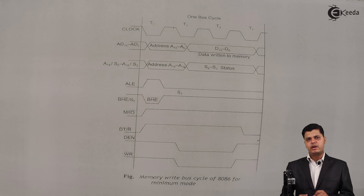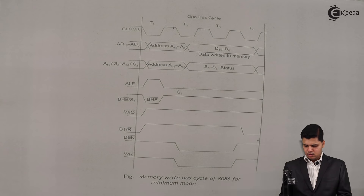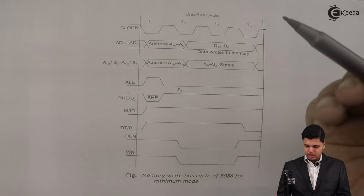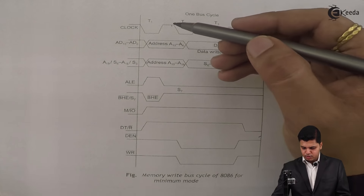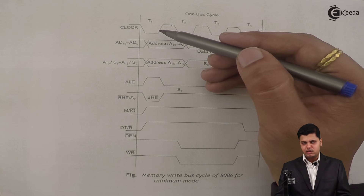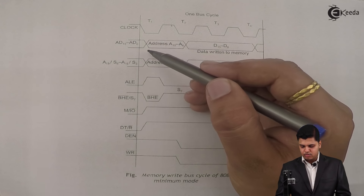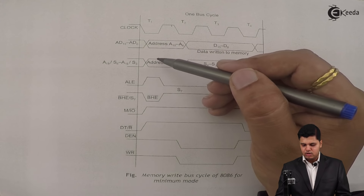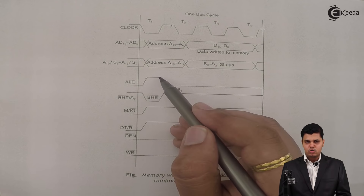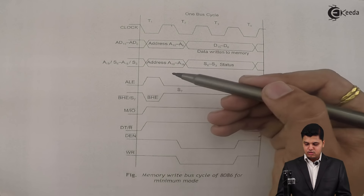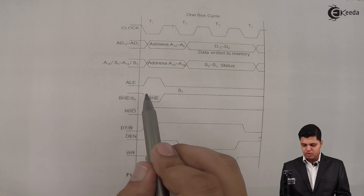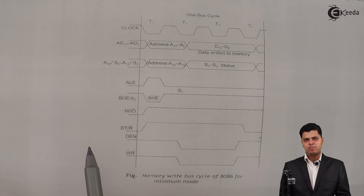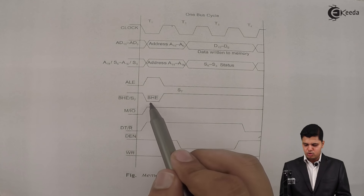The write cycle performs similar operations to the read cycle, but only two signals change: the write signal and DT/R bar. In the T1 state of the write cycle, the address is available on the address and data bus — same as in the read cycle — and the address latch enable goes high, enabling the external latch so the address is latched. Depending on whether an even or odd address bank is being accessed, BHE bar goes low or high.